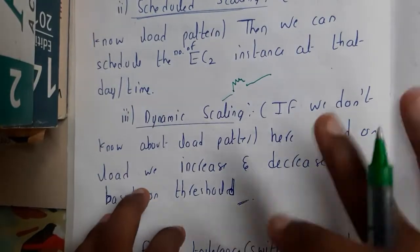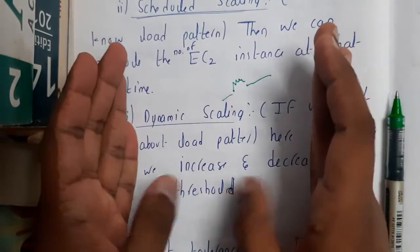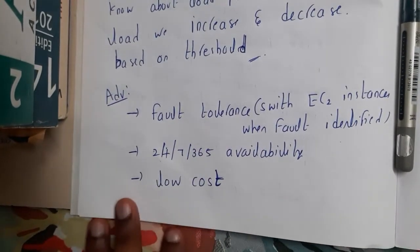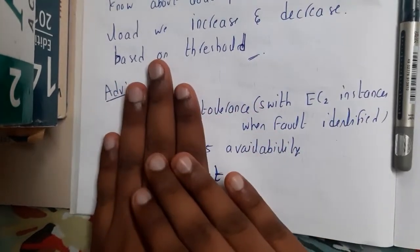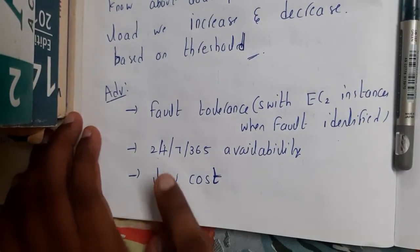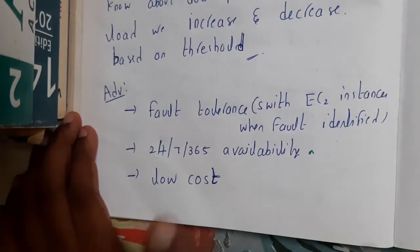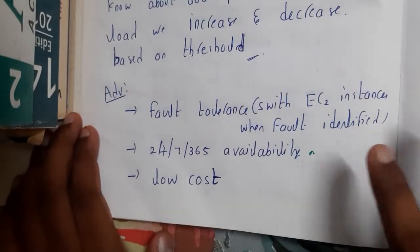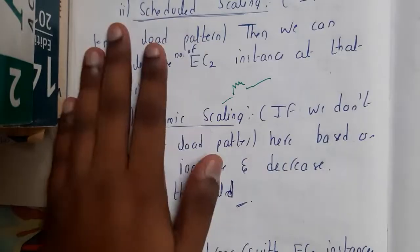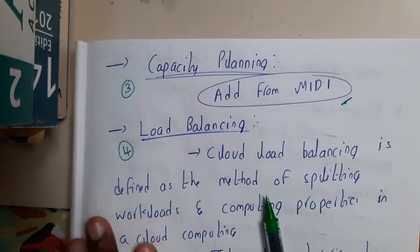Dynamic scaling is used when you don't know any pattern. You set a minimum and maximum, and based on traffic level the instances are automatically selected. The major advantages are: fault tolerance is improved because if one EC2 instance fails it is turned off and another is turned on; availability is 24/7/365 at 99.99%; and cost is lower compared to keeping instances running all the time. In the next lecture we will discuss capacity planning.